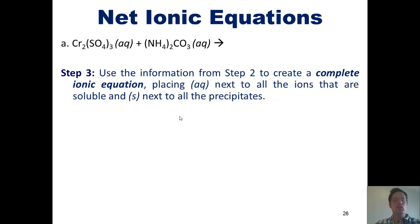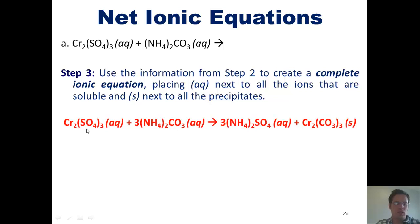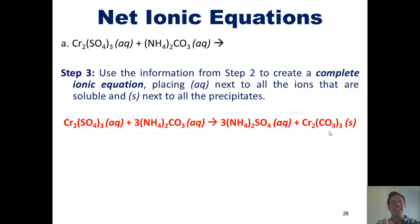Having done that, we move on to step 3, which says to use the information from step 2 to create a complete ionic equation — placing AQ next to everything soluble in water and S next to everything that isn't. Chromium sulfate, ammonium carbonate, and ammonium sulfate are all soluble in water, but chromium carbonate, as we saw, is not. We can now complete step 3 by sawing every one of these compounds in half.